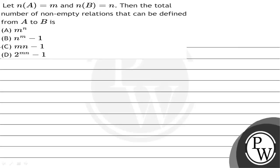Let's read the given question. Let n(A) = m and n(B) = n. Then the total number of non-empty relations that can be defined from A to B is: